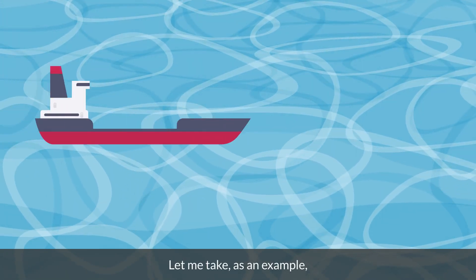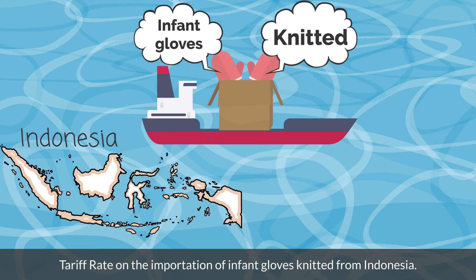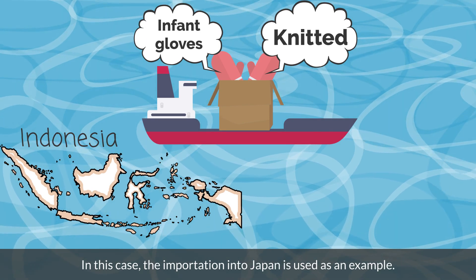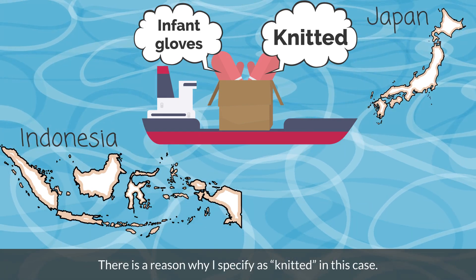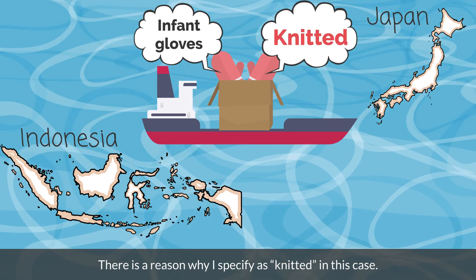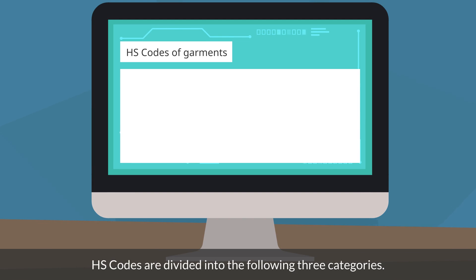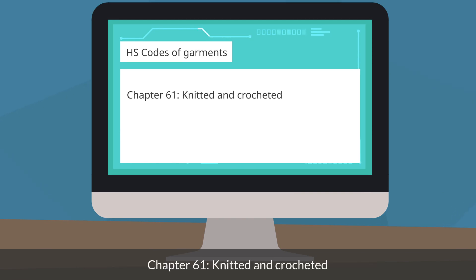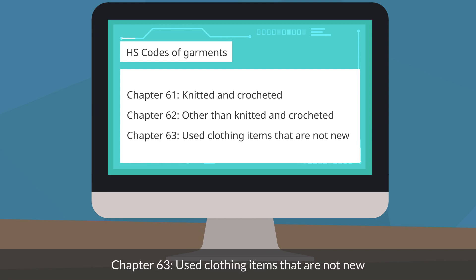Let me take as an example the tariff rate on the importation of infant gloves knitted from Indonesia into Japan. There is a reason why I specify knitted in this case. If the imported goods are garments, HS codes are divided into three categories: Chapter 61, Knitted and Crocheted; Chapter 62, Other than Knitted and Crocheted; and Chapter 63, Used Clothing Items that are not new.